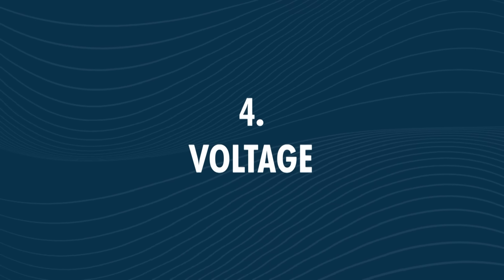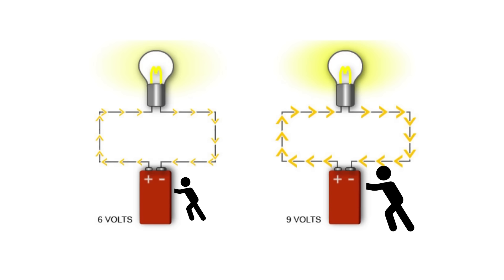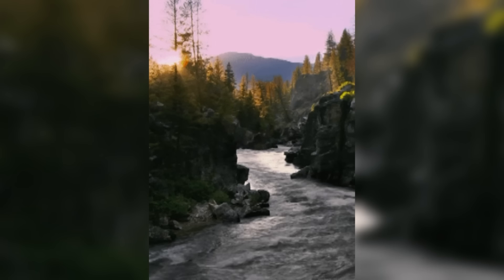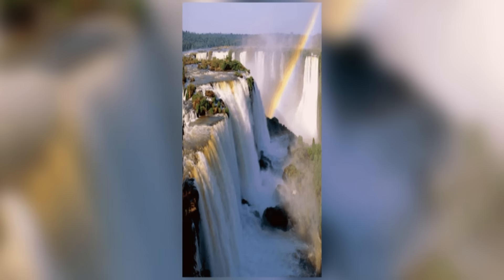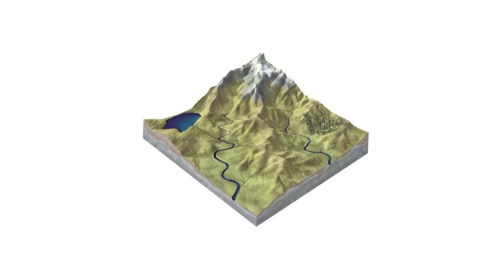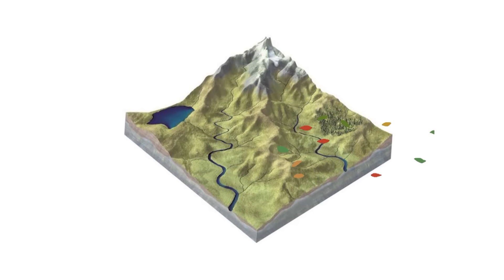Now that we understand current and current intensity, how does voltage come into play? Voltage is the electromotive force that pushes electrons from one atom to another, always in the same direction. Without voltage, electrons would not move. Let's compare this to the flow of water in a river. Essentially, volts to electricity equals pressure to water flow. Water flows from a high to a low point — from the mountain to the lake, ocean or sea — due to height and gravitational pull. Without wind or decline in altitude, the river would be stagnant, just as any electrical conductor without voltage.